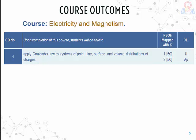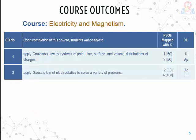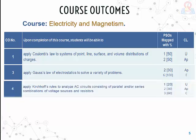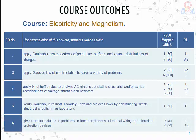This outcome is mapped with 2 PSOs — the first at 50% at the understanding level, and the second also at 50% at the apply level. The third outcome is to apply Gauss's law of electrostatics to solve a variety of problems, with 2 mappings: PSO 2 at 30% and PSO 6 at 100%, with apply and evaluate levels. The fourth outcome is mapped with 3 PSOs with specified percentages. We have 6 course outcomes in total for Electricity and Magnetism.